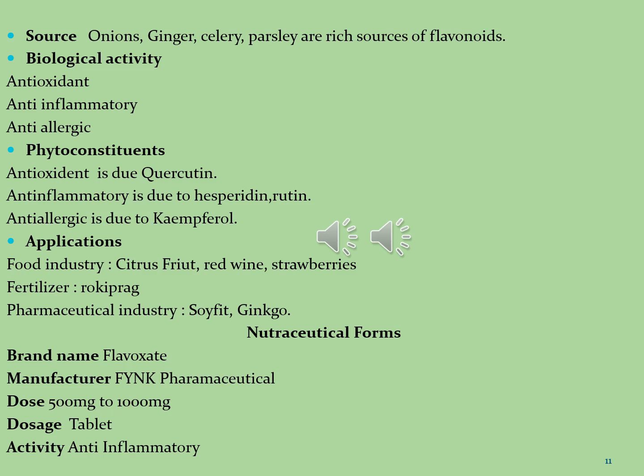Flavonoids are used in the food industry, as fertilizers, and in pharmaceutical industries. Citrus fruits, red wine, and strawberries are used in food industries. Rocky praak is used as fertilizers. Ginkgo biloba is a major and very common nutraceutical product used in pharmaceutical sectors.